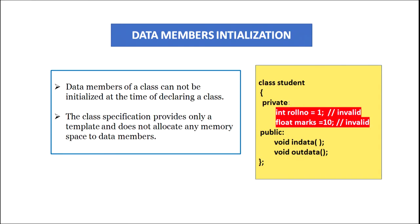We have already learnt that initialization of variables is must before using them because otherwise they may contain garbage value. Similarly, initialization of data members is also essential. But the problem with the class is that at the time of declaring a class, we cannot assign any initial value to its data members, as the class specification only provides a template and does not allocate any memory space to the data members. The necessary memory space is allocated to data members only when the object of the class is created. So we cannot assign any value to the data members before the object of that class is created.